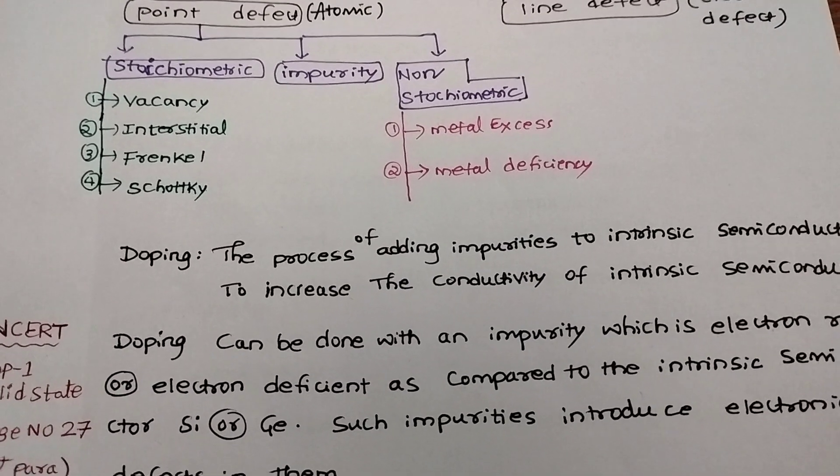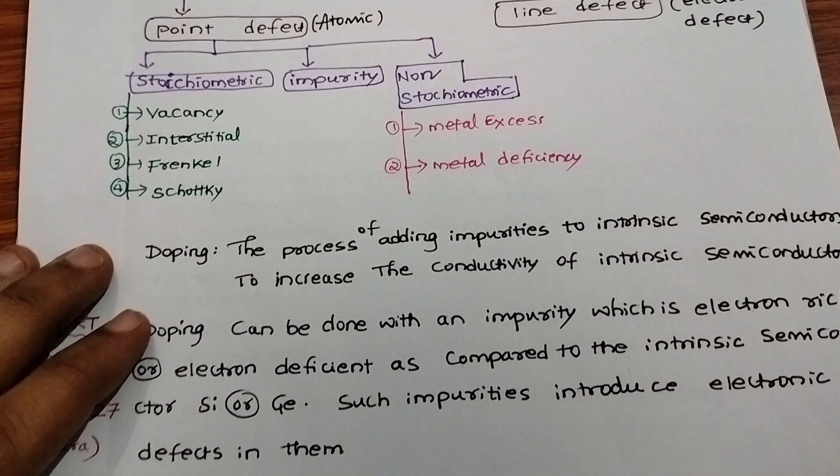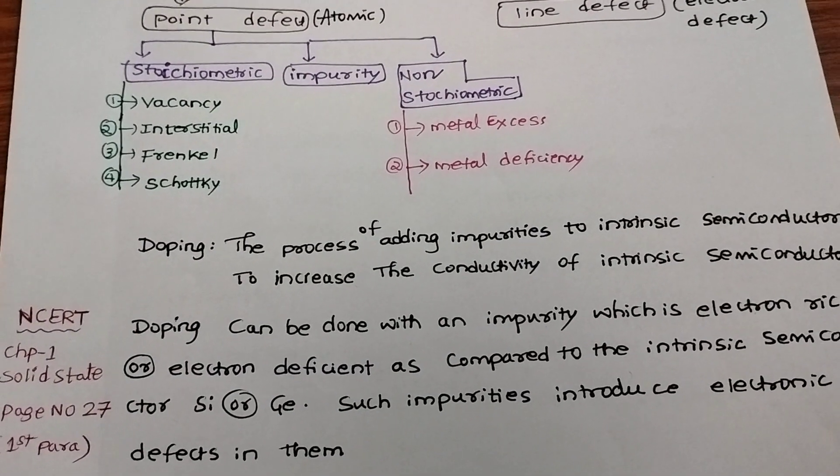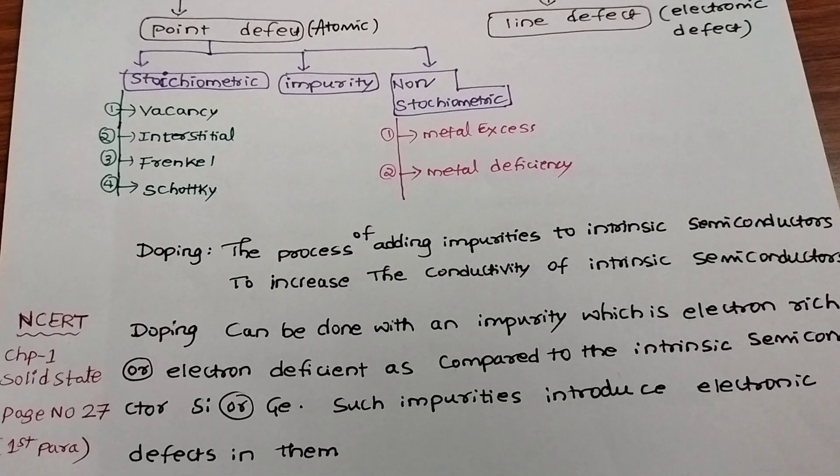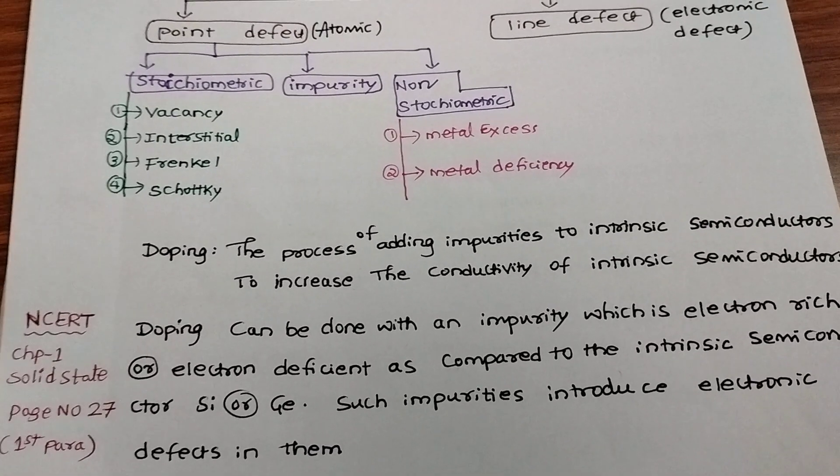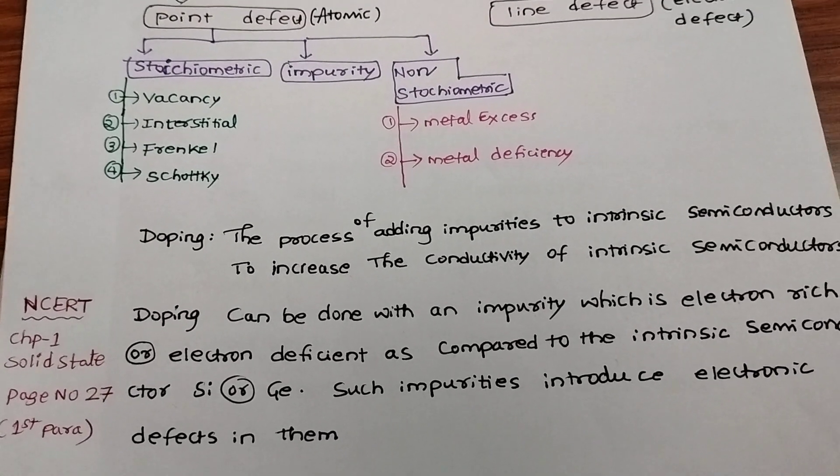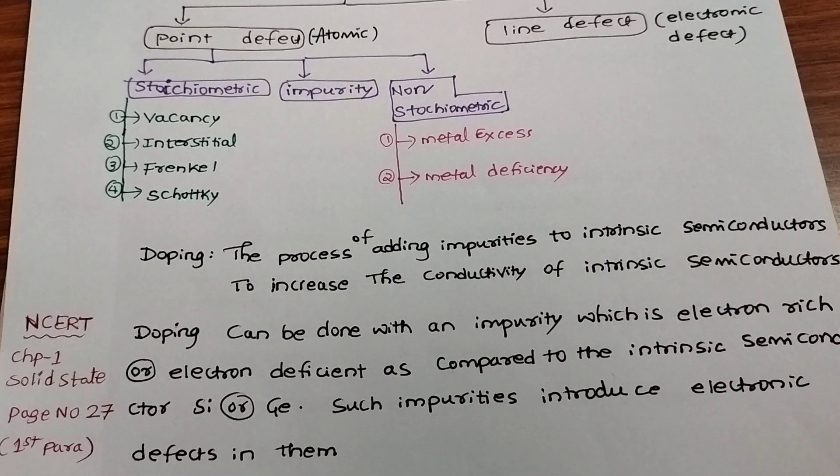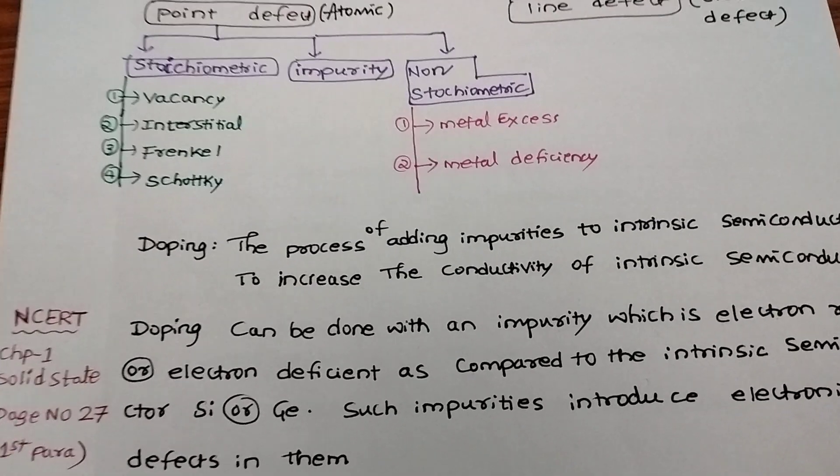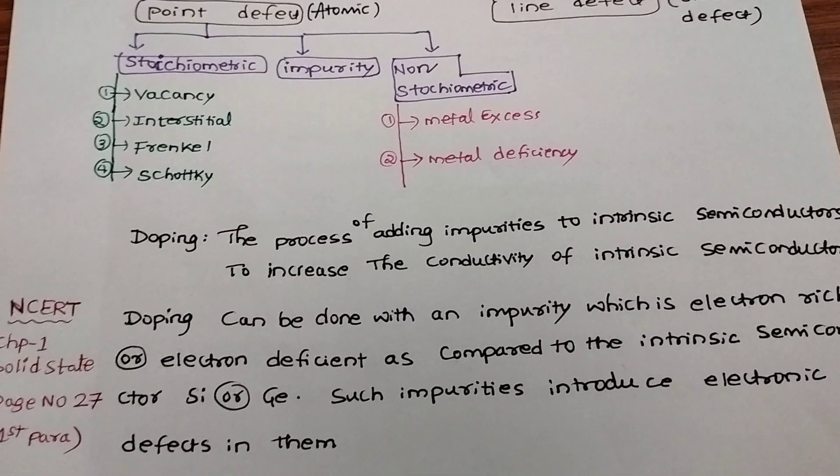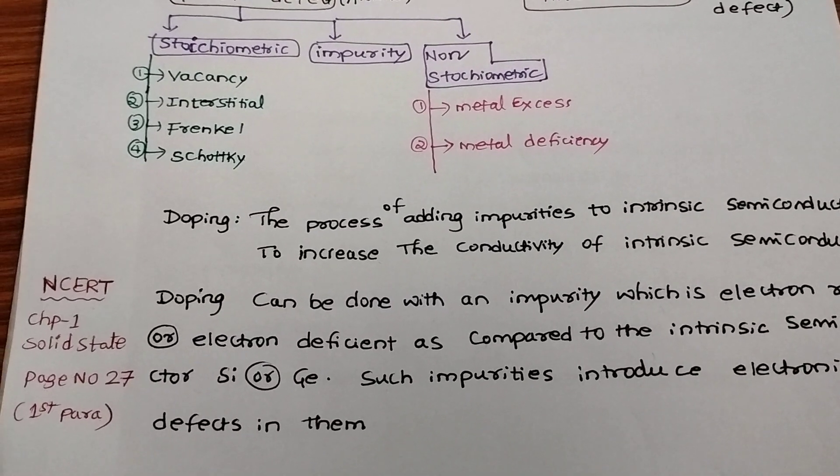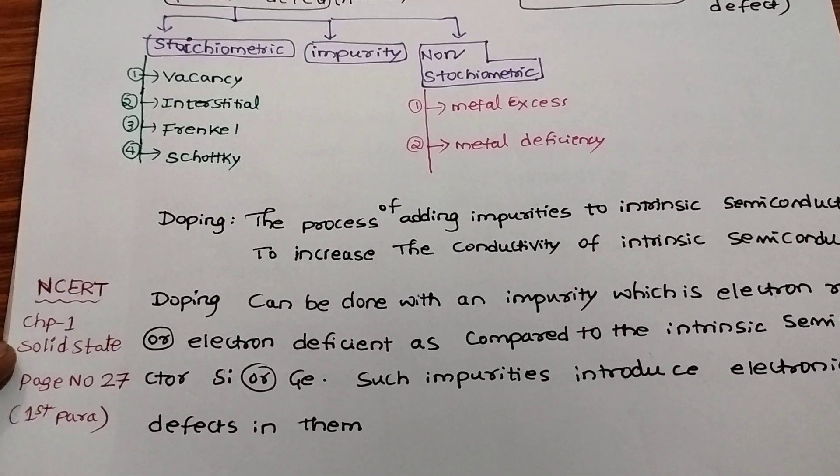During doping with an impurity that is electron-rich or electron-deficient compared to intrinsic semiconductors like silicon or germanium, such impurities will create electronic defects. I have also mentioned this in NCERT chapter 1.